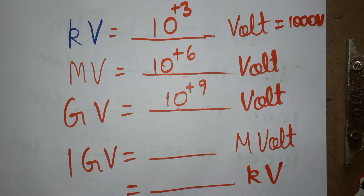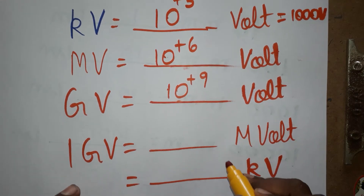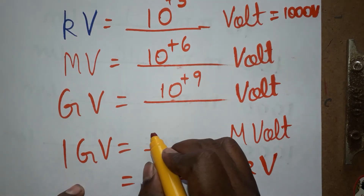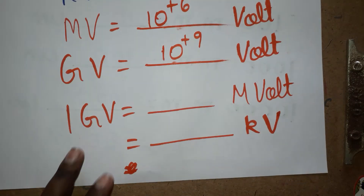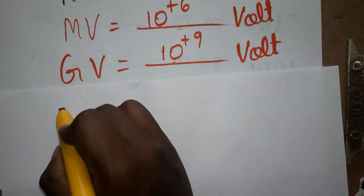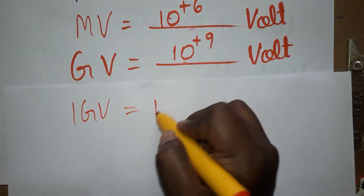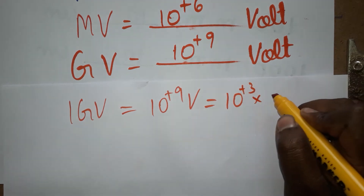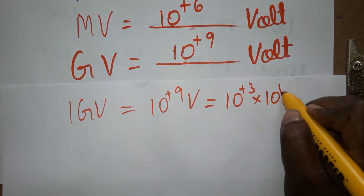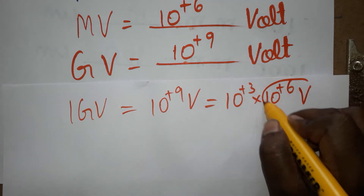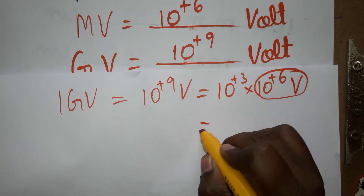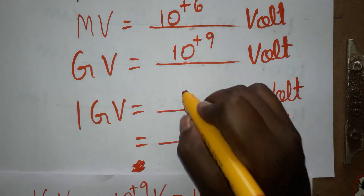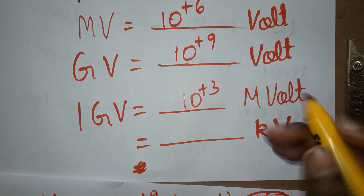1 GV is equal to MV. See here: 1 GV is 10 power 9 V, which we can write as 10 power plus 6 into 10 power plus 3. So 10 power plus 6 we can call MV, so it is 10 power plus 3 MV. Therefore 1 GV is equal to 10 power plus 3 MV.